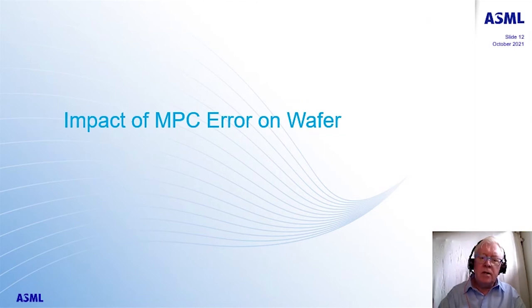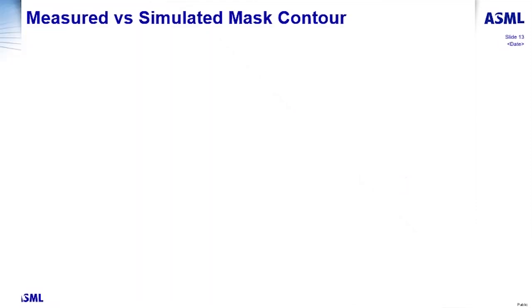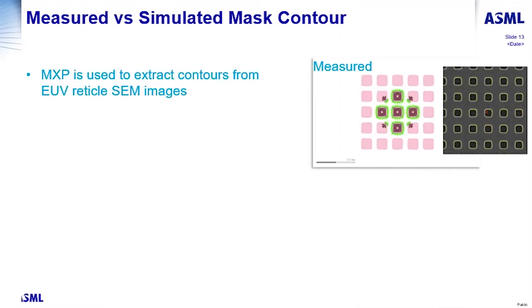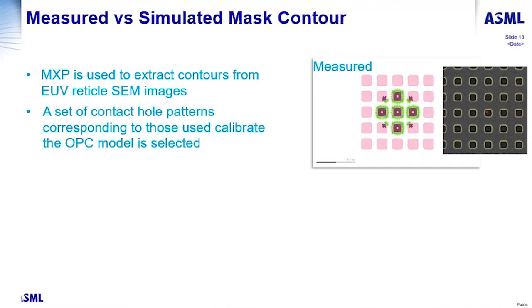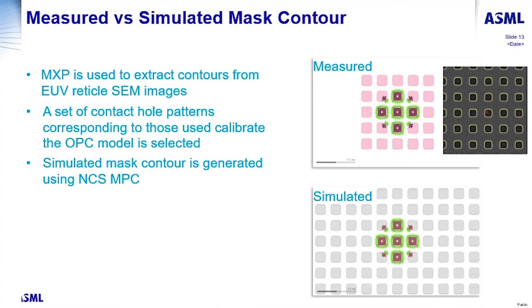I'd now like to turn my attention to how these errors in the MPC, even with the improved model, are propagating down to the wafer. Essentially, what we want to do is compare the measured versus the simulated mask contour. MXP is used to extract the contours from the EUV reticle SEM images. In this situation, we are not doing averaging — we are taking the numbers from one mask because we want to look at the local variation and not just the average systematic shape variation. These holes were chosen from the test patterns shown previously.